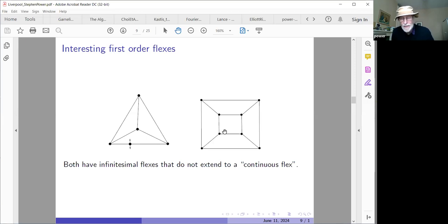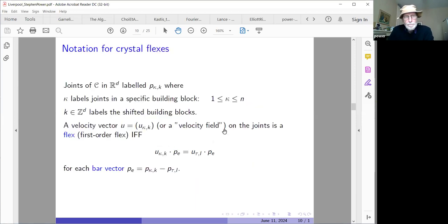So here are two finite frameworks with interesting flexes. They're in two dimensions. There's a velocity vector. There's a zero velocity at these four joints here where there's a parallel between this bar and this bar. You can imagine there's an infinitesimal velocity here, which won't stretch the joint initially. This is supposed to be a square within a square. This, too, has an interesting first order flex, which gives a little rotational motion to the four inner joints. These particular infinitesimal flexes do not extend to a continuous deformation, a finite motion, as it's sometimes called.